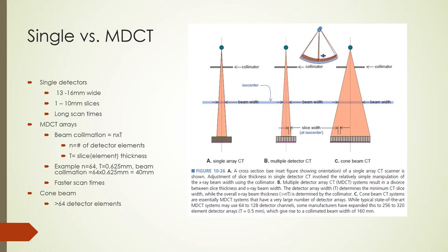In multi-detector CT scanners, slice thickness is determined by the detector configuration, represented by the number of detector elements and the thickness of each element. Beam collimation equals element thickness multiplied by the number of detector elements. For example, 64 detector elements each 0.625 mm thick gives a beam collimation of 40 mm. Once you have more than 64 detector elements, the beam profile becomes more like a cone — called cone beam CT.